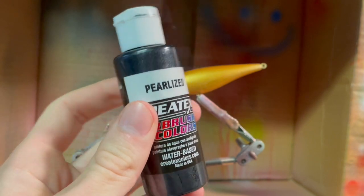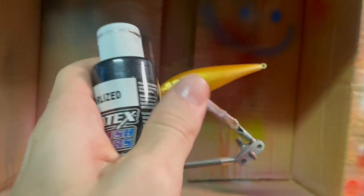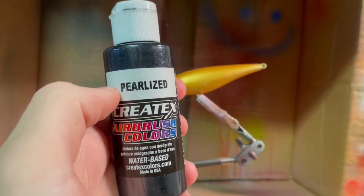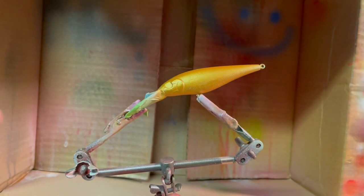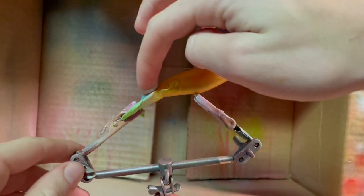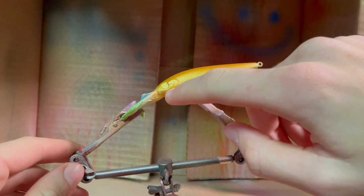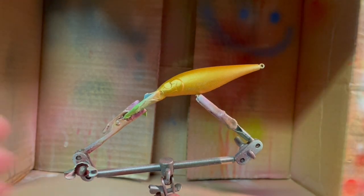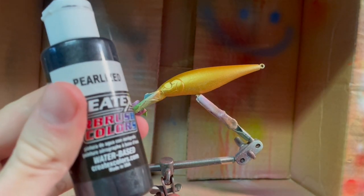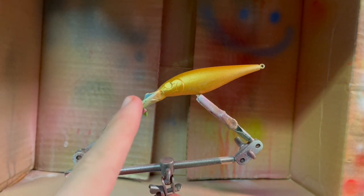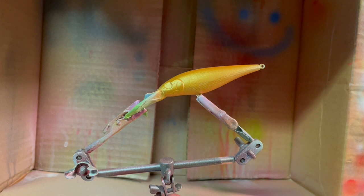All right, so the next color we're going to be using is this pearlized black Createx favorite airbrush paints right here. They're awesome. They're so good. And I'm going to do this along the back. And I've also got a little stencil that I'm going to outline the gill. You can get this Createx paint at Barlow's Tackle, and also you can get this lure blank. I forgot to mention that at the start. You can get both of these at Barlow's Tackle, and then remember, pearlized, so shake it up.